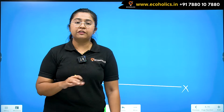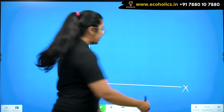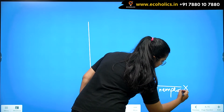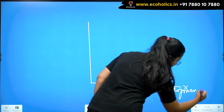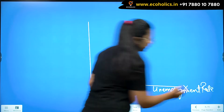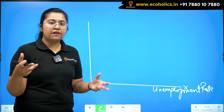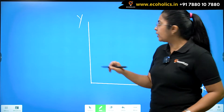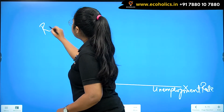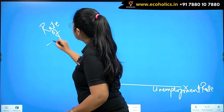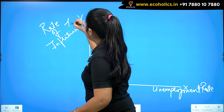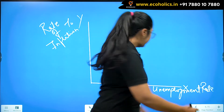On the x-axis we have the unemployment rate — the percentage of unemployment in the country. On the y-axis we have the rate of inflation, also a percentage. Both axes represent percentages.